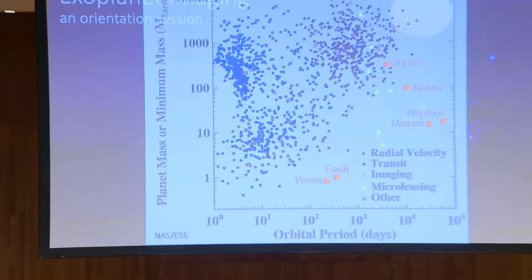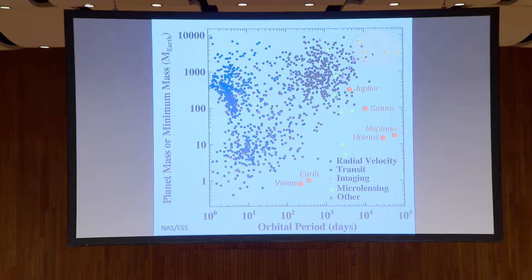Those of us in high contrast imaging love to show the picture of HR 8799 because it makes us look really successful. In fact, this is the only system for which we've directly imaged multiple planets, and we've really only imaged between a dozen and two dozen planets in total. Clearly we need to push closer into the stars to better overlap with the radial velocity regime, and push to fainter planets to overlap with planets like Jupiter and Saturn in our own solar system.